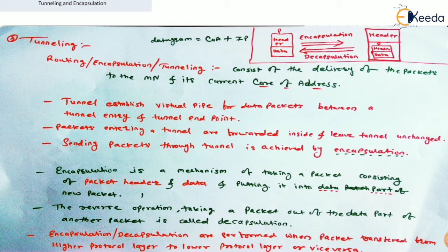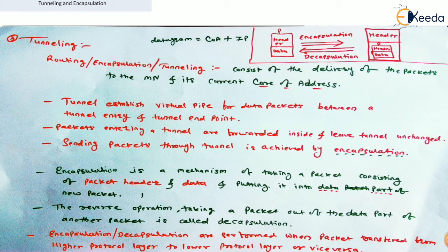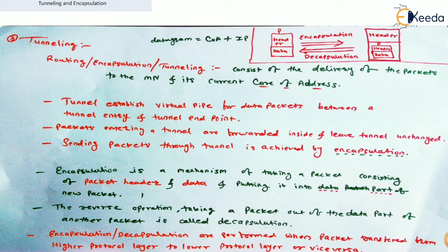Whatever packets are received at the home agent, the home agent processes those packets and forwards them to the foreign agent. This processing is called tunneling — packets enter the tunnel, get forwarded inside, and leave the tunnel unchanged. If we changed something in the tunnel, the message would be routed to another destination. That's why packets must leave the tunnel unchanged.